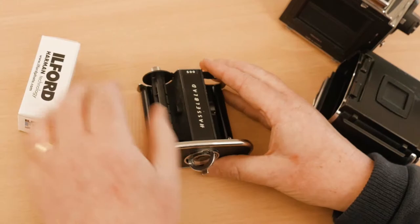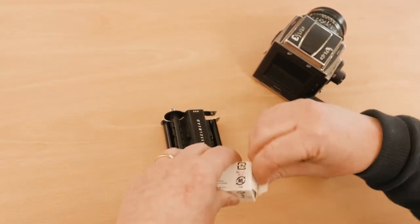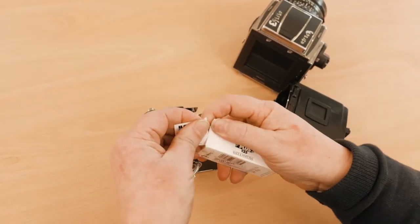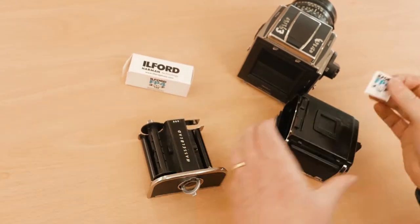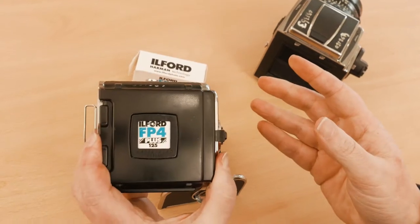Once I've got that loaded I can get the film out of the film box. This end is quite useful so I can put it into the back of the camera and it will remind me what I've got in the back like so.